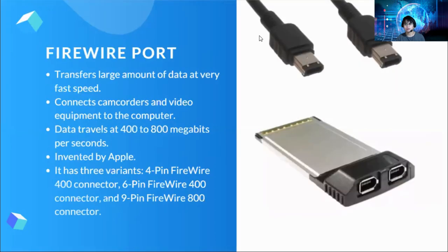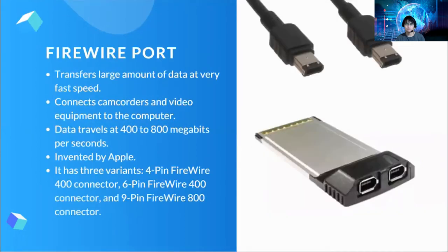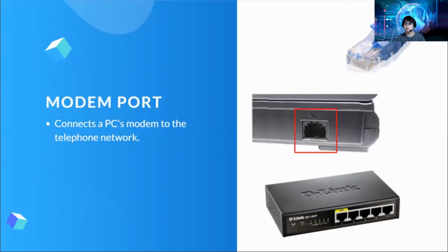Next is FireWire port. The FireWire port is used for transferring large amounts of data at very fast speed. It connects camcorders and video equipment to computers. Data travels at 400 to 800 megabits per second. It was invented by Apple and has three variants: four-pin FireWire 400 connector, six-pin FireWire 400 connector, and nine-pin FireWire 800 connector. We also have modem port, which connects the PC modem to the telephone network.